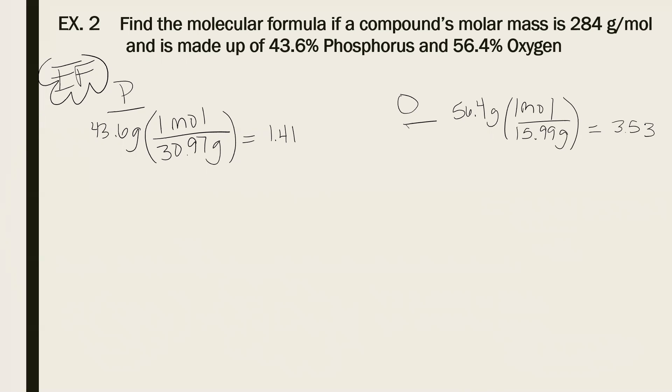Okay, now I have to divide by the smaller of the numbers. So 1.41 divided by 1.41 gives me one. 3.53 divided by 1.41 gives me 2.5. Cannot round that up or down. You have to figure out what times this will give you a whole number.